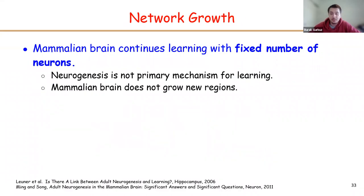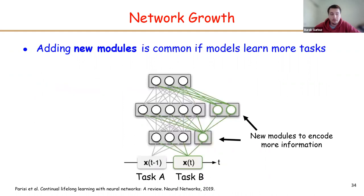Finally, the fourth mechanism: the mammalian brain continues learning more and more tasks with a fixed number of neurons. Of course there is neurogenesis in a few restricted brain regions, but growing the brain is not the primary mechanism for learning. In contrast, in deep learning architectures it is very common practice to add new modules to the architecture as we need to learn more and more tasks.